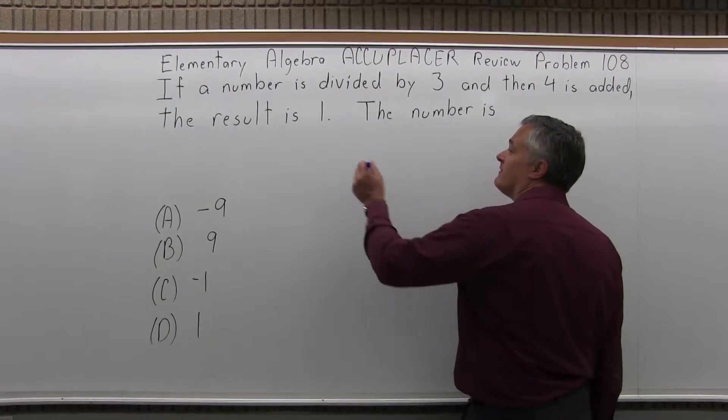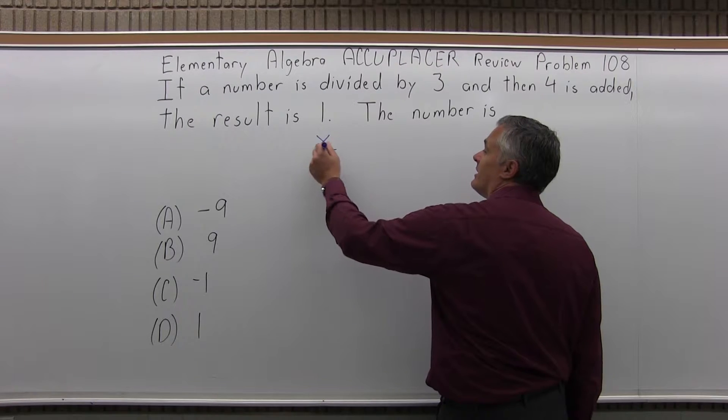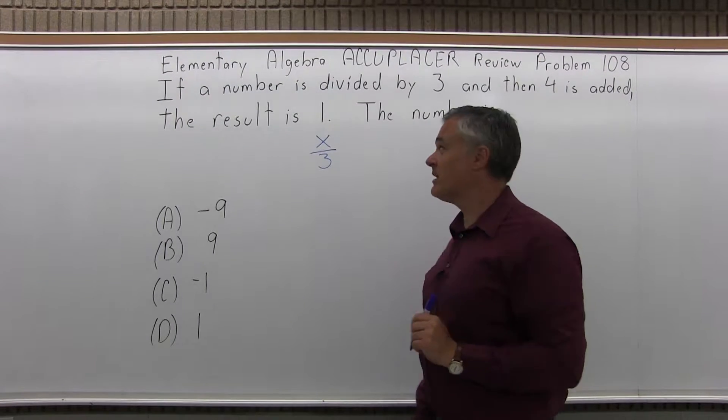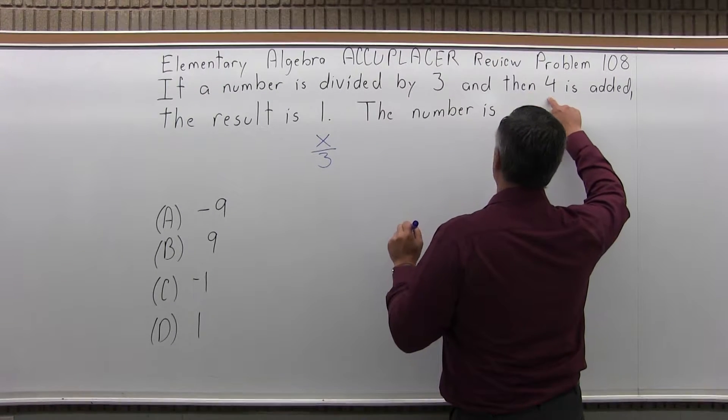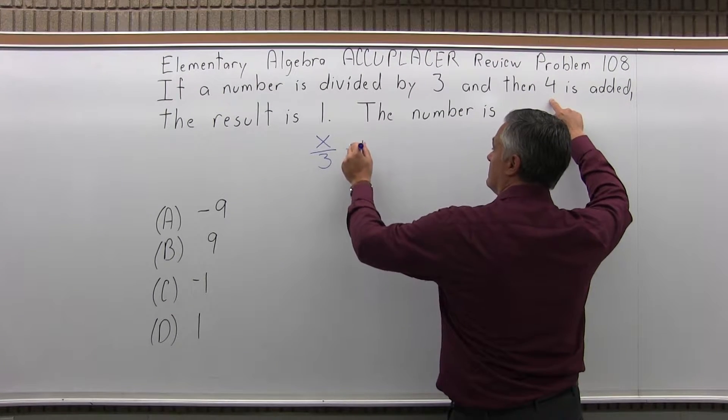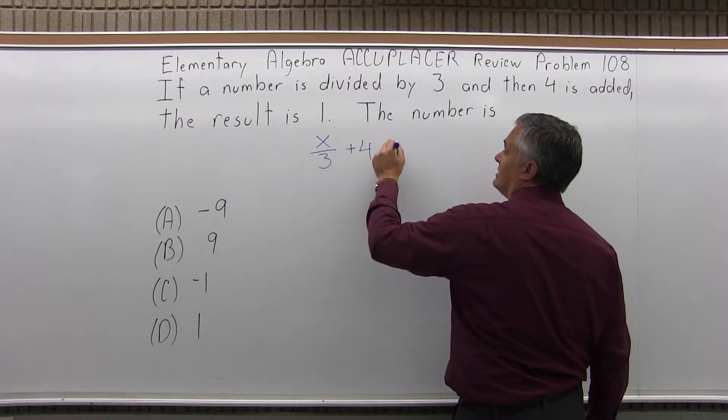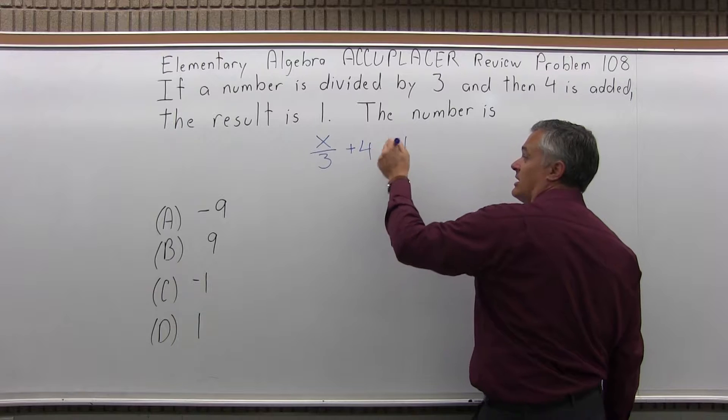So if a number is divided by 3, that can be written as x over 3 or x divided by 3. If a number is divided by 3, then 4 is added, so plus 4, and the result is 1. So the result would be 1.